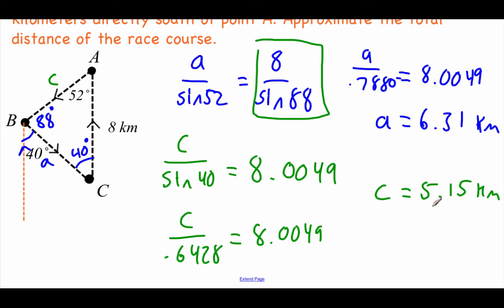Now we want the total distance, so we're just going to add up our three sides. And when we do that, our total distance should be about 19.46 kilometers.